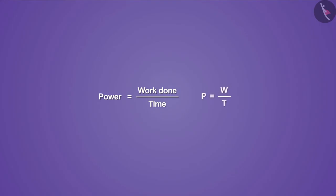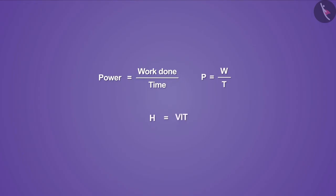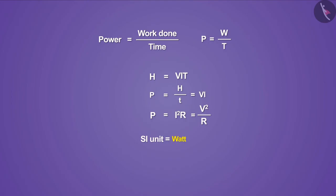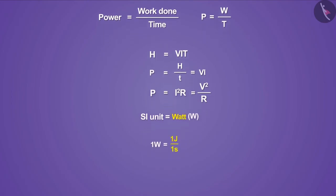In terms of science, the work done is equal to energy. If its rate is taken, then it represents power. Like work, power can be written in different ways. The unit of power is watt, which is represented by W. One watt is equal to one joule of work done in one second.